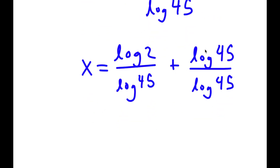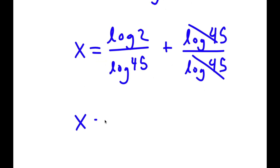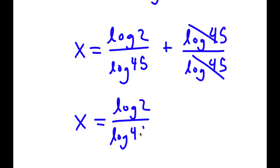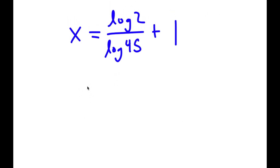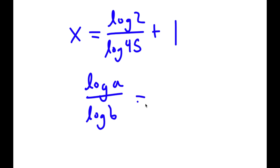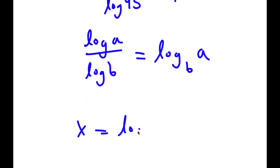Log 45 over log 45 cancels out, so now I have x is equal to log 2 over log 45 plus 1. If I have something in the form log a over log b, I can write this as log base b of a. So log 2 over log 45 is the same thing as log base 45 of 2, plus 1.